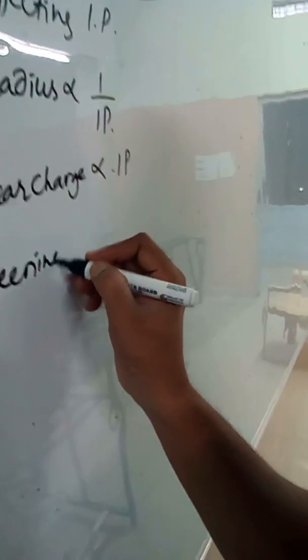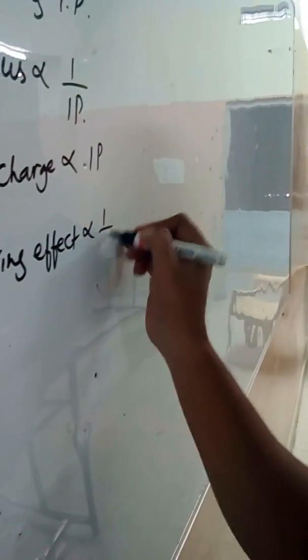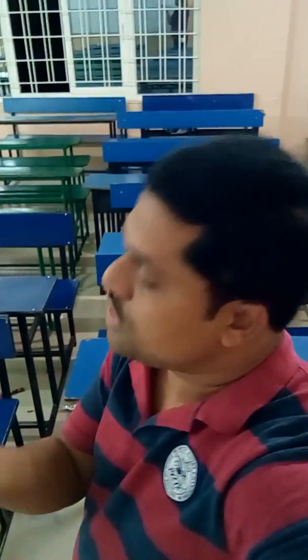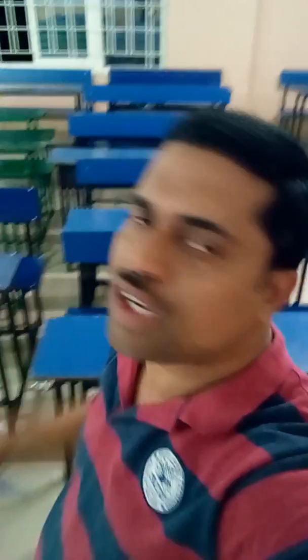The third factor is the screening effect, which is inversely proportional to ionization potential. Screening effect means that all inner shell electrons act as a screen between the nucleus and the outermost shell. The different orbitals involved are S, P, D, and F. S orbital is spherical, P orbital is dumbbell-shaped, D is double dumbbell, and F is fourfold dumbbell. The nucleus is also spherical in shape.